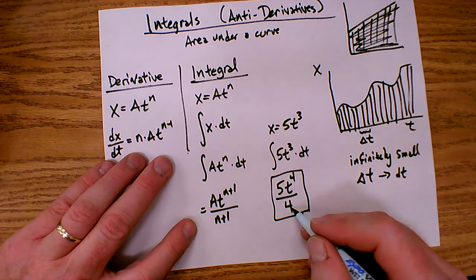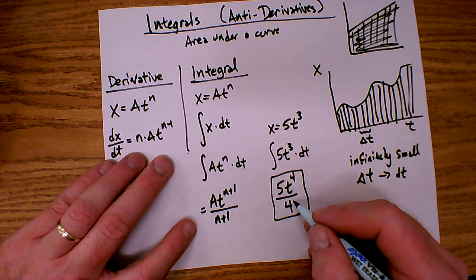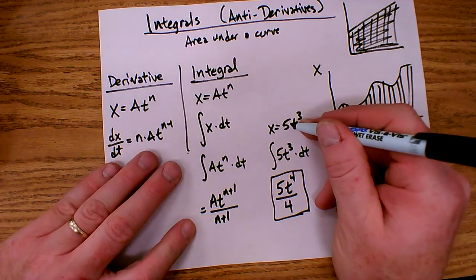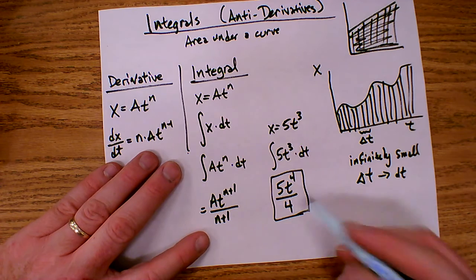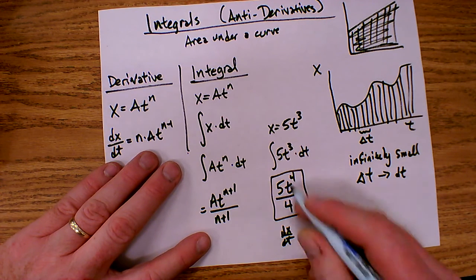Now, I can do a quick check on this to see if I got the integral correct, because again, integral is antiderivative. So if I do the derivative of this, I should get back to my original function. So the derivative of this function, I would get...